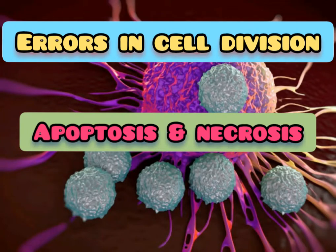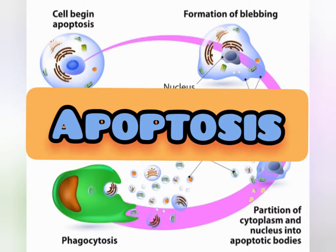As-salamu alaykum everyone. I hope that you are all right. Now in this video we are going to discuss the two errors of the cell. In cell division there are two errors that we are going to discuss: the main ones are apoptosis and necrosis. Let us first talk about apoptosis.